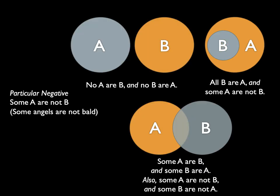The final of the four moods is the particular negative — particular because of the term "some," negative because of the term "not." So the particular negative is "some A are not B," such as "some angels are not bald." This allows for three possibilities. The upper-left is the same as the universal negative, accounting for the possibility that no angels are bald and no bald things are angels. The upper-right demonstrates that there are angels who are not bald, but all bald things are angels. Lastly, the bottom Venn diagram depicts angels who are not bald, bald things that are not angels, and the overlapping portion showing angels who are bald.